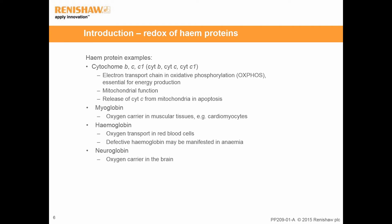Cytochromes, myoglobin, hemoglobin and neuroglobin are some of the naturally occurring heme proteins, and they are very important for our health. Cytochromes B, C and C1 are important members of the electron transport chain in the mitochondria, which is part of the oxidative phosphorylation pathway used to produce energy. Normally cytochrome C is intact within the mitochondria, but during apoptosis it is released into the cytosol. Myoglobin, hemoglobin and neuroglobin are oxygen carriers in muscular tissues, red blood cells and the brain respectively. Defects in myoglobin can affect muscle cell functions, and defective hemoglobin may be manifested in anemia.